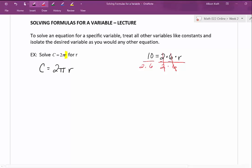We need to divide both sides by 2π to isolate the r. When we do that, the 2 and the π cancel on the right-hand side and we're left with C divided by 2π equal to r.